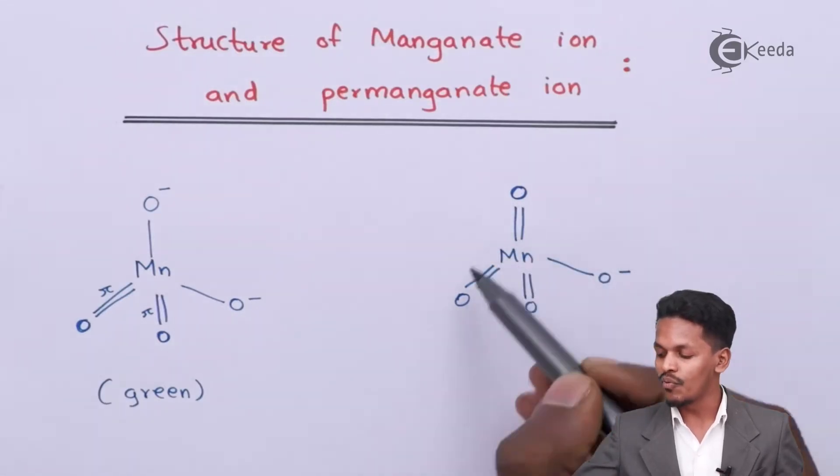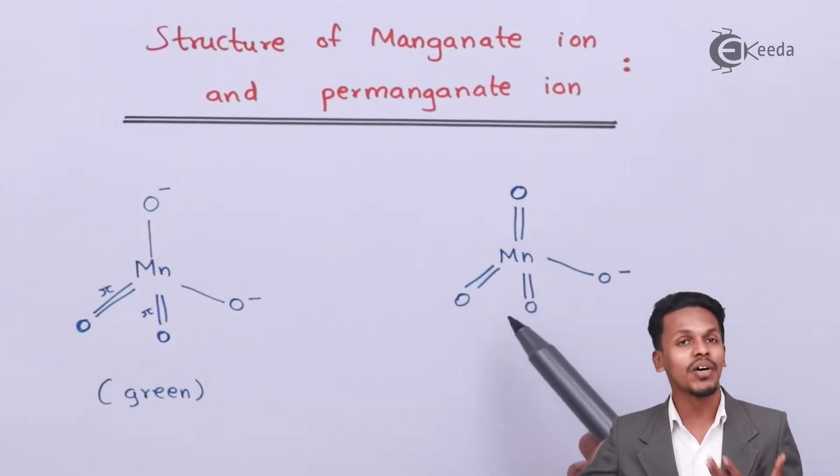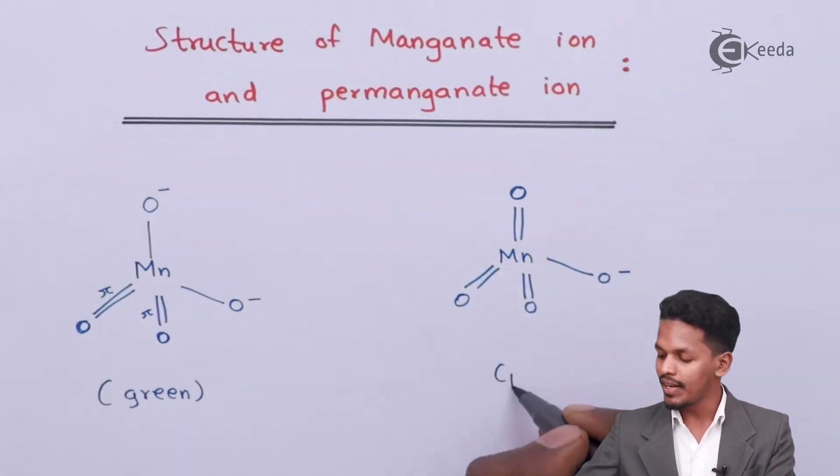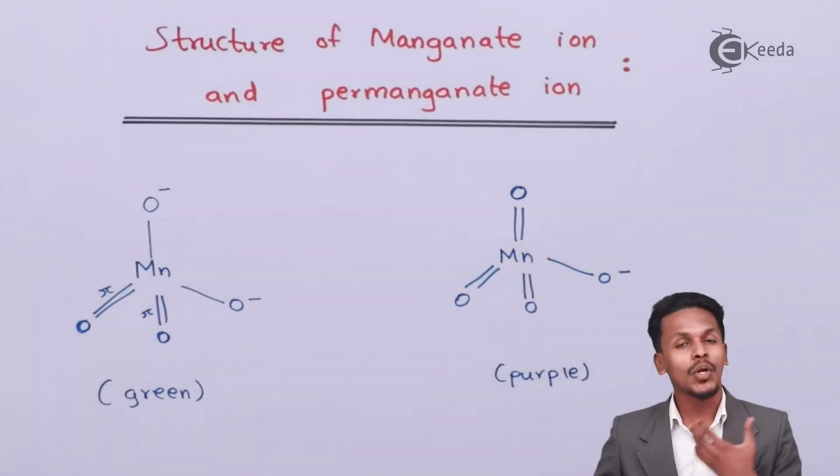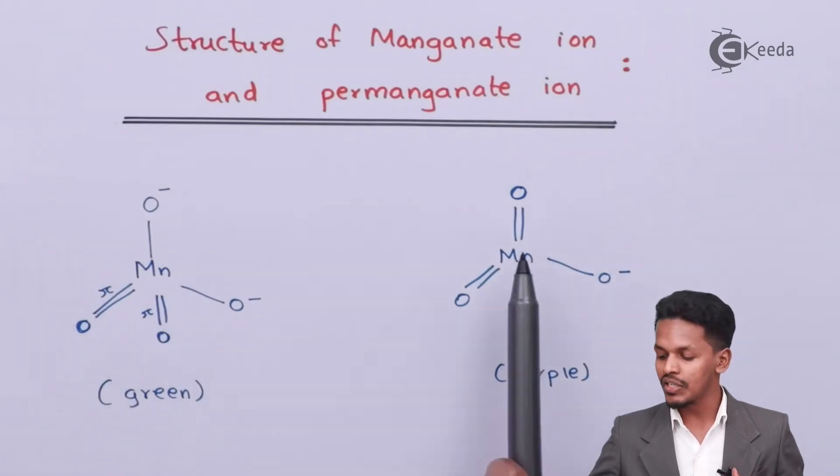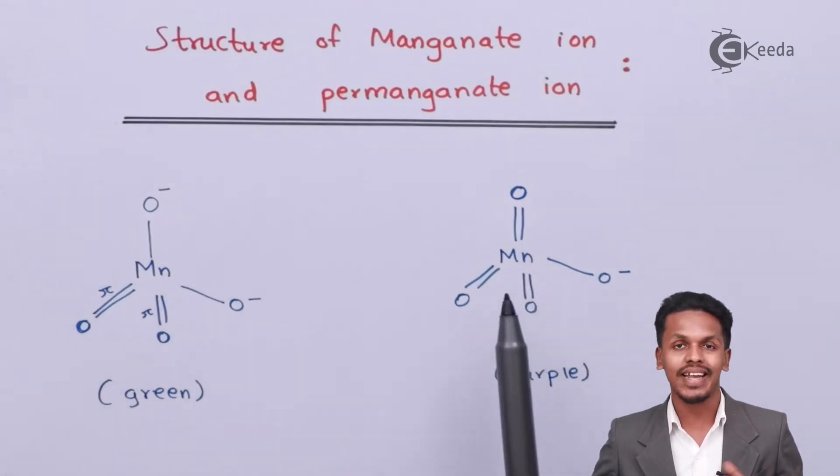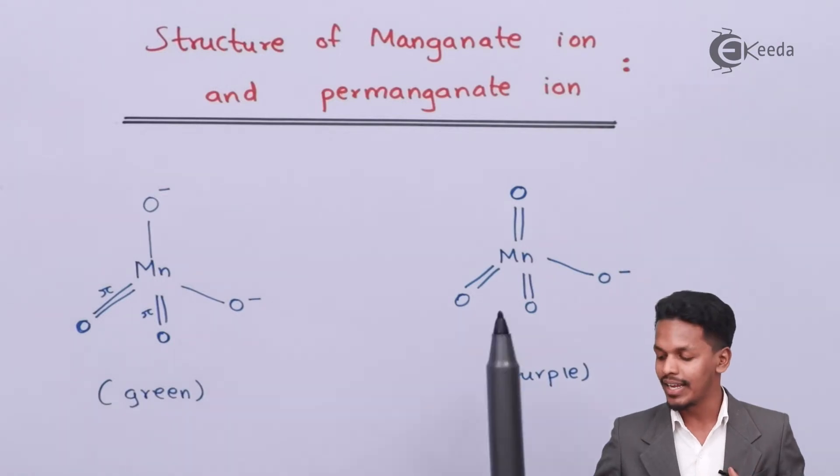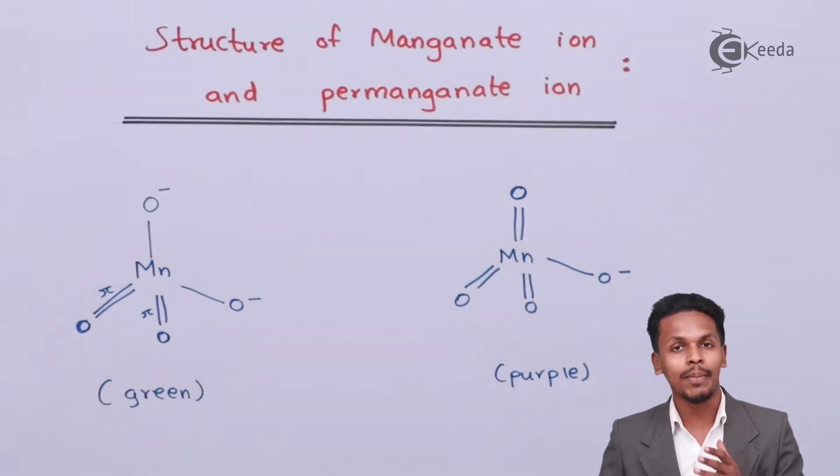This is KMnO4 or we could also call it permanganate ion. Talking about the color, the color is purple because potassium permanganate is basically dark purple in color. These are the color differences. Talking about the structure, both have tetrahedral geometry. Now let me discuss the magnetic property.